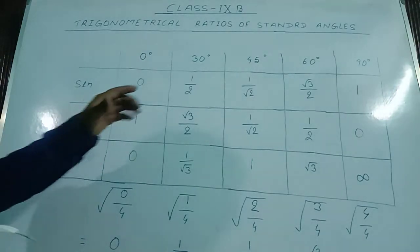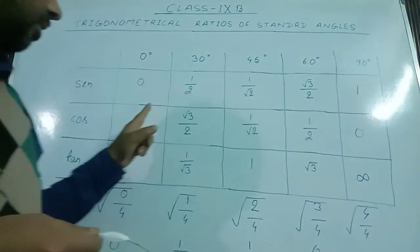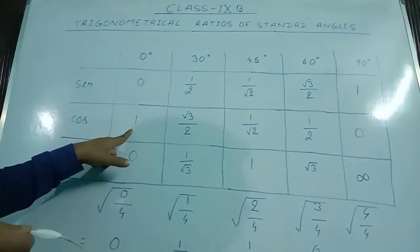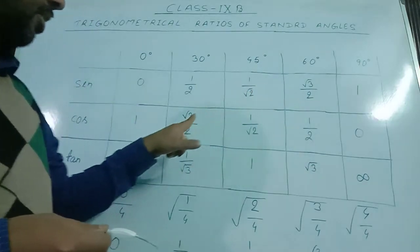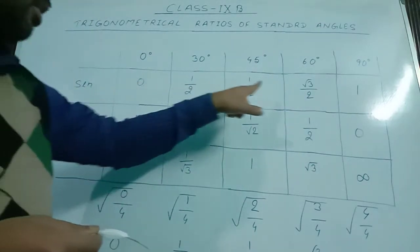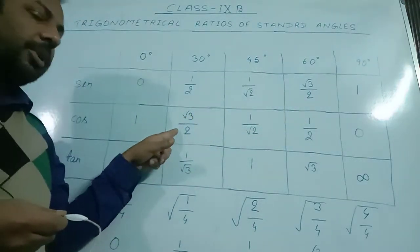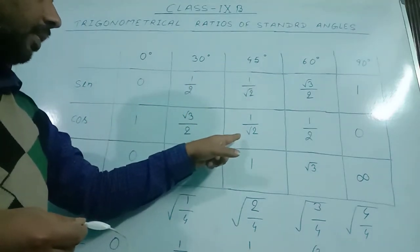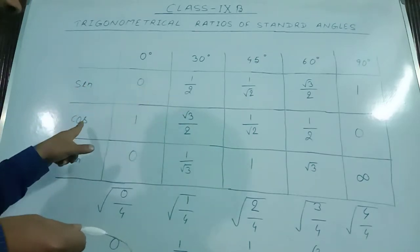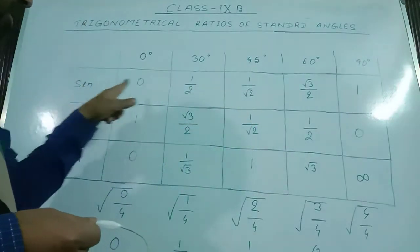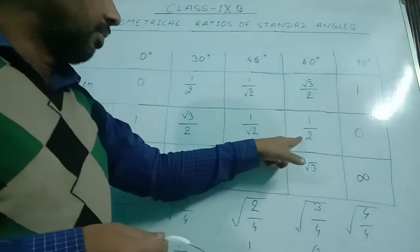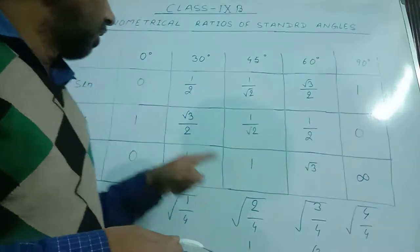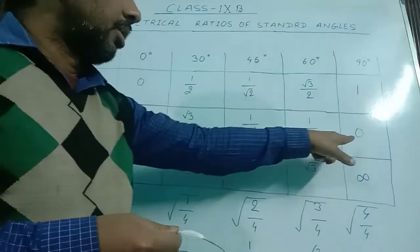To write the values of cos, we reverse the sin values. The value of sin 90° comes at the place of cos 0°. Since sin 90° is 1, cos 0° = 1. Sin 60° = √3/2 comes at the place of cos 30°, so cos 30° = √3/2. The value of sin 45° and cos 45° remain the same: 1/√2. Sin 30° = 1/2 becomes the value of cos 60°. And since sin 0° = 0, the value of cos 90° = 0.